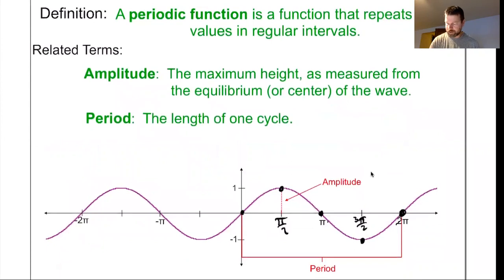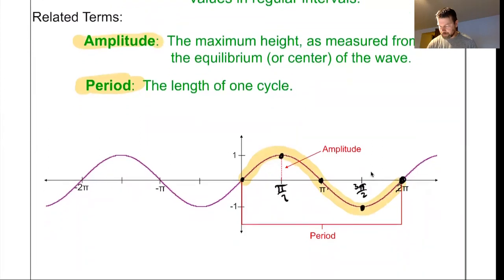A couple of things. First, here's our definition of a periodic function, a function that repeats its values in regular intervals. Again, those regular intervals are called the period of the function. So a period of a function is just the length of one cycle. In the case of sine, it's 2π. And then that period repeats over and over and over again. The amplitude of a function is its maximum height as measured from equilibrium or the center of the wave. So this one has a maximum height of 1. The amplitude is right here. That's a distance of 1.